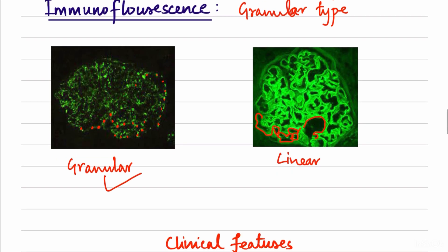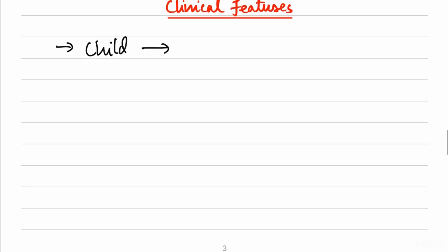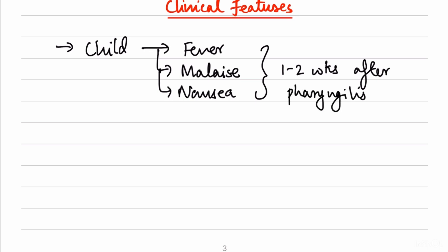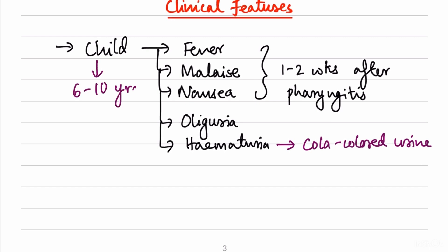Having finished the pathogenesis and morphological findings, we move to clinical features. The child presents with non-specific symptoms such as fever, malaise, and nausea, occurring one to two weeks after a pharyngitis or skin infection. Nephritic features include oliguria with decreased urine output, and hematuria presenting as cola-colored urine. The most affected age group is six to ten years, and a history of streptococcal infection is suggestive of post-streptococcal glomerulonephritis.